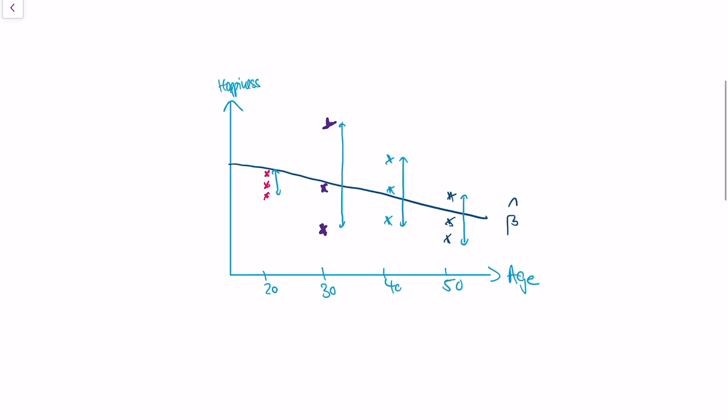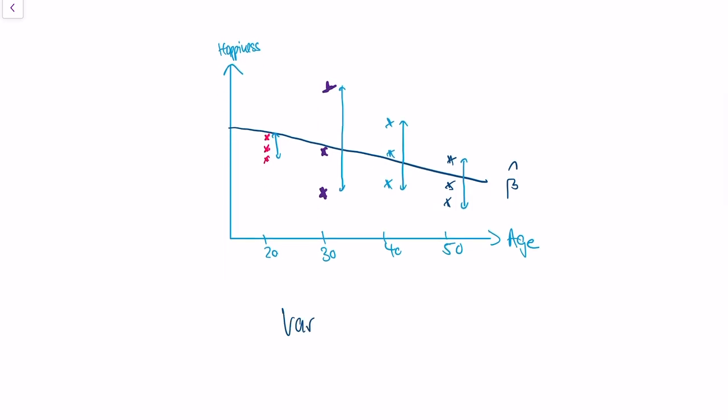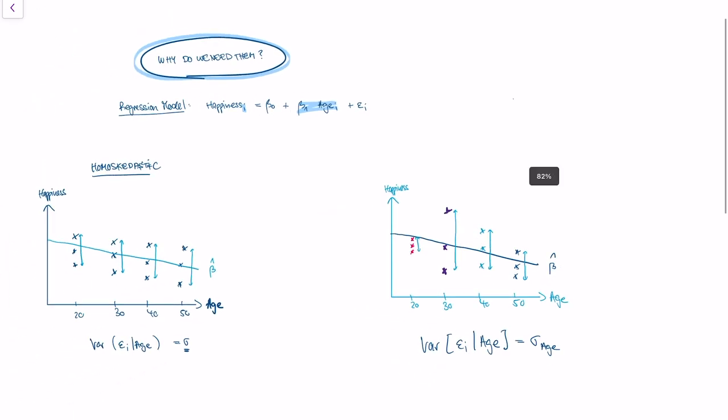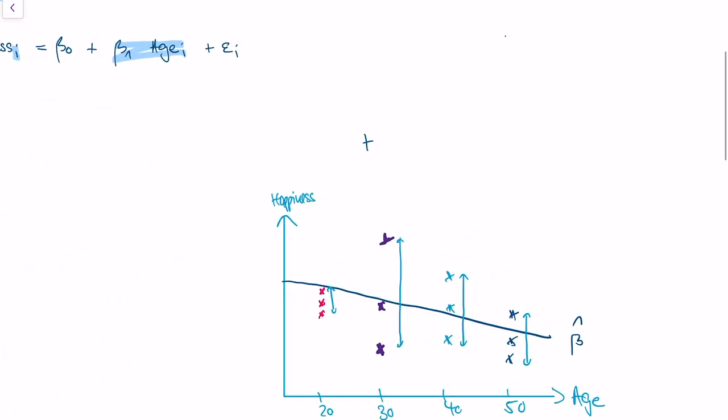So in this case, in this data, the variance of our error term, of our random variation, dependent on the age, is not a constant. But it depends on the age itself, right? At an age of 30, we have a very large variance. At the age of 20, we have a very low variance. And this is what we would call a heteroscedastic case.